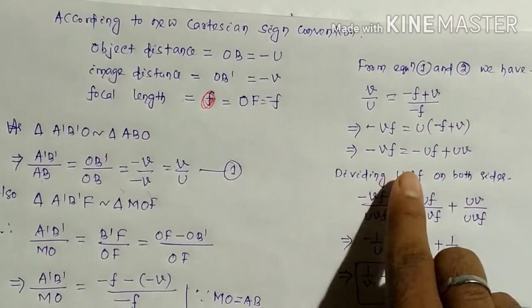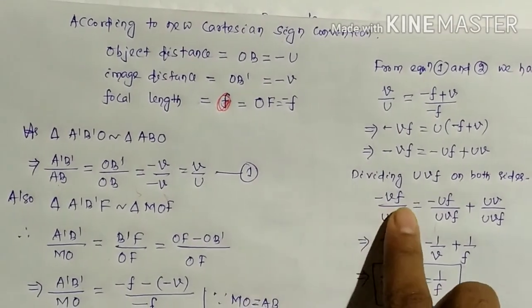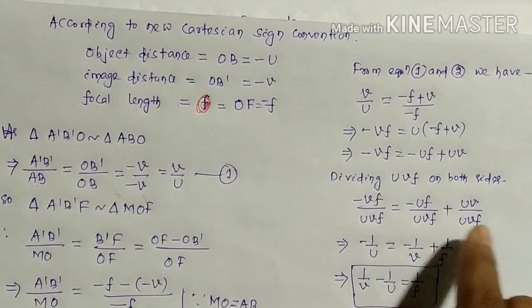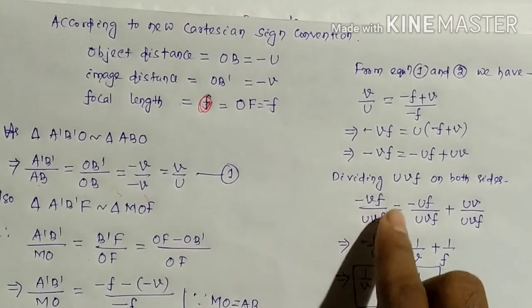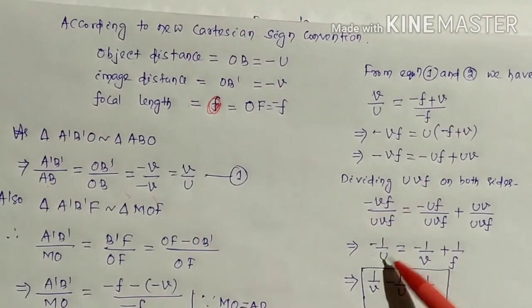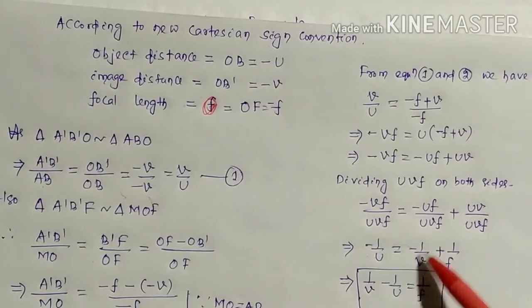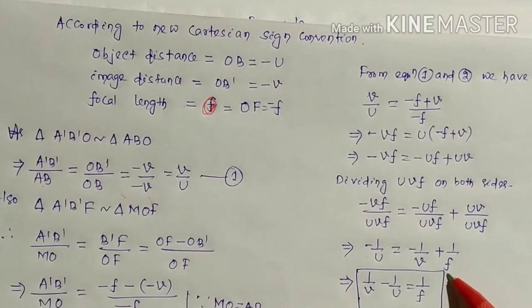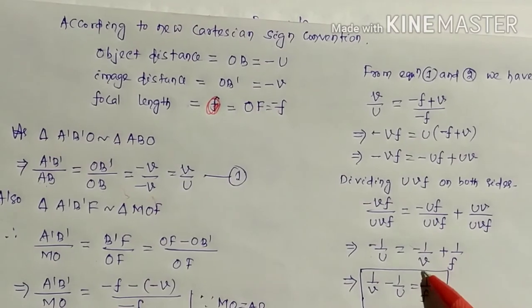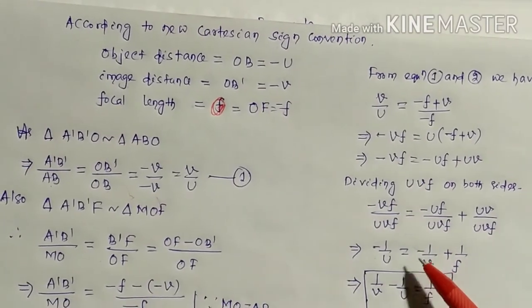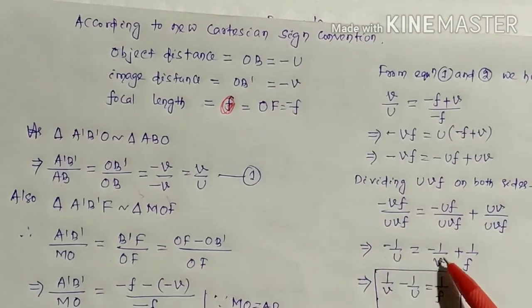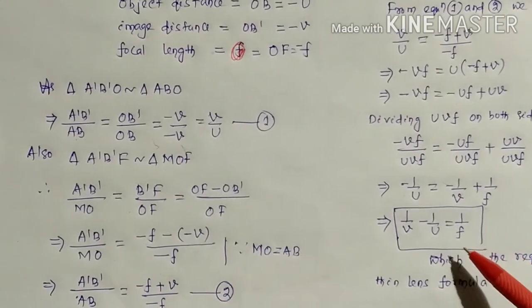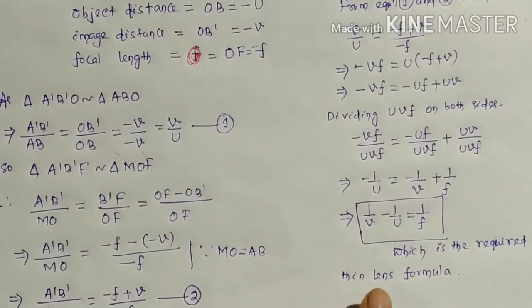Dividing both sides by uvf: −vf/uvf = −uf/uvf + uv/uvf. After cancellations: −1/u = −1/v + 1/f. Rearranging gives: 1/v − 1/u = 1/f.